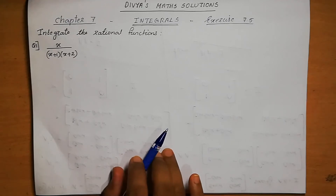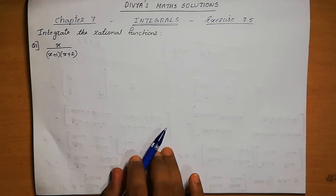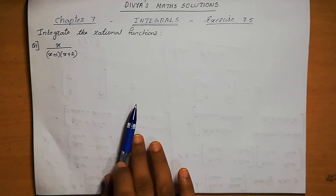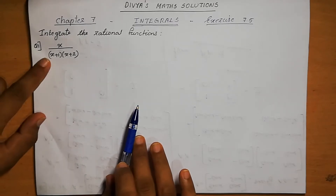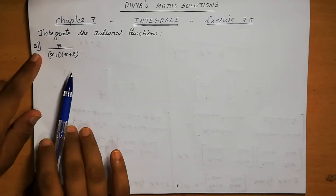Dear students, welcome to Divya's Maths Solutions. Today, we are going to discuss Chapter 7, Integrals, Exercise 7.5. Integrate the Rational Function. Question number 1: x by (x plus 1) into (x plus 2).